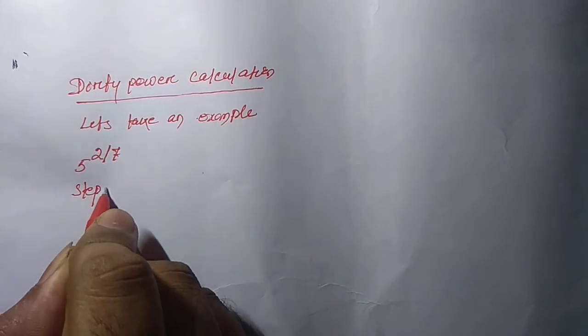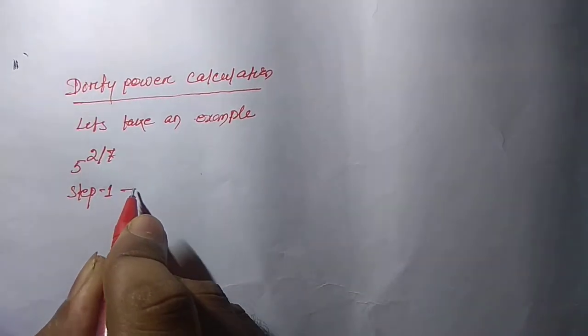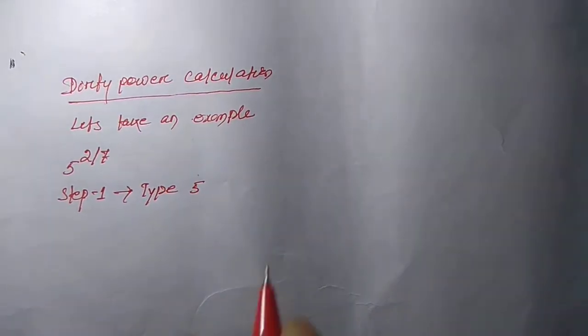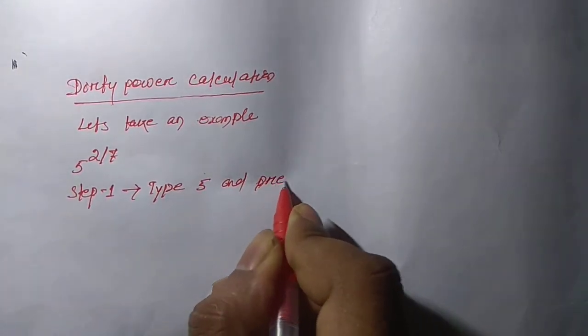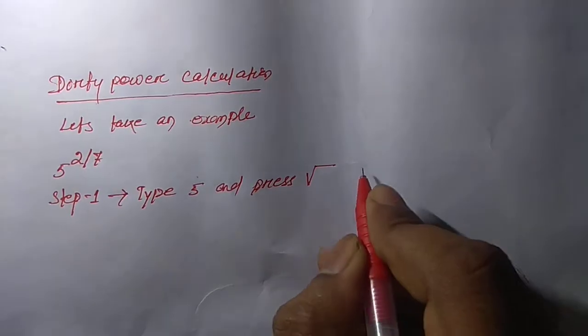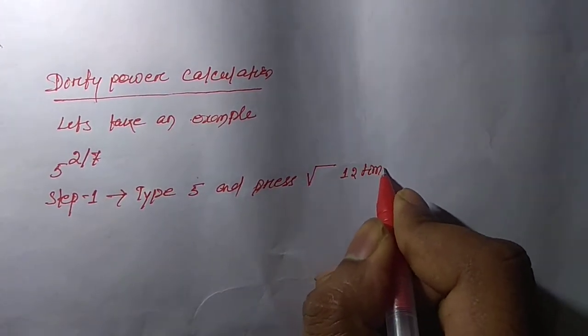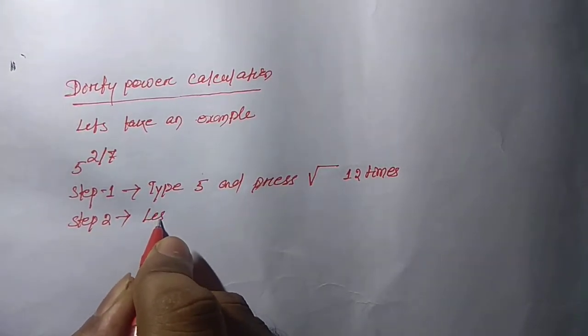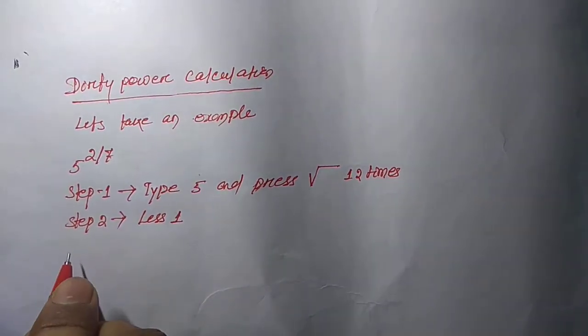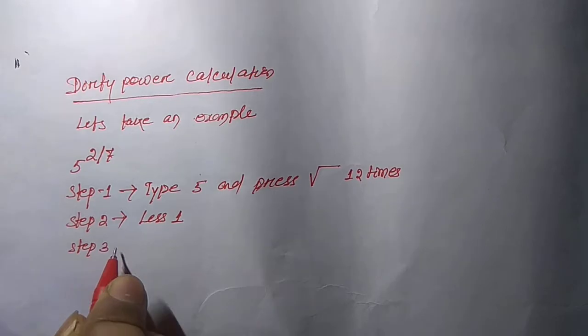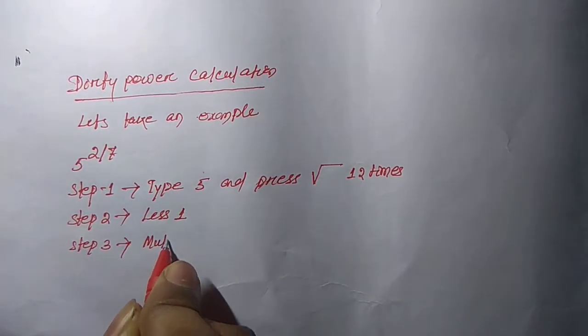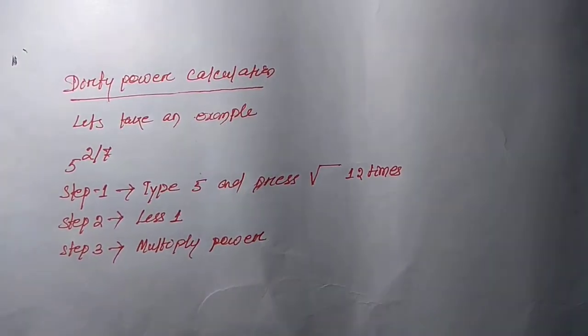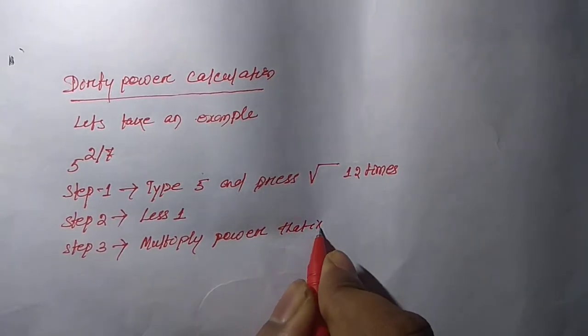Step 1: Type 5 and press root over 12 times. Step 2: Less 1. Step 3: Multiply by the power, that is 2 by 7.